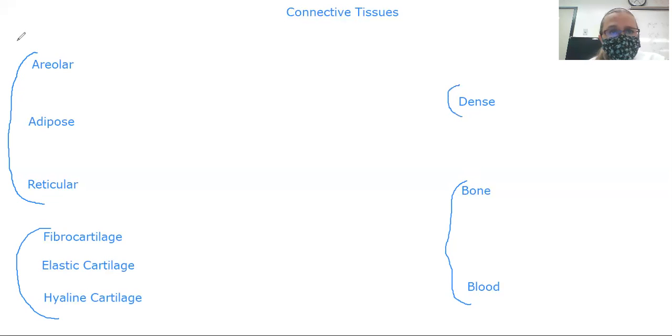So these ones over here are called loose: the areolar, the adipose, and the reticular. And that's because the fibers within them, the collagen and the elastic fibers are not tightly packed. They're loose, they're far apart from one another. And they're not in any regular structure. They're just kind of there, kind of willy nilly.